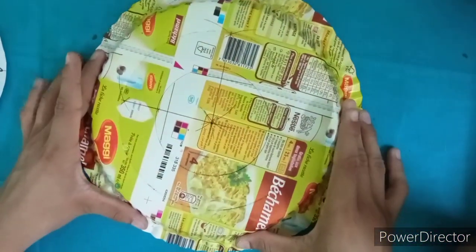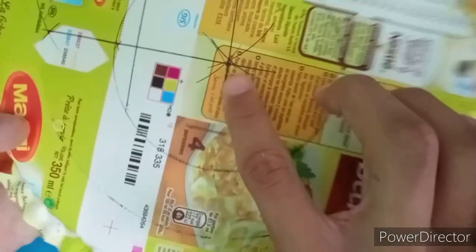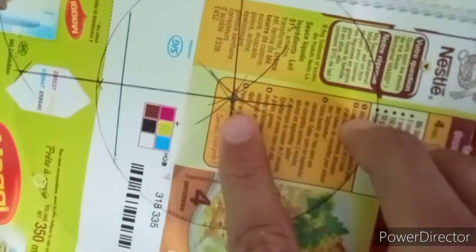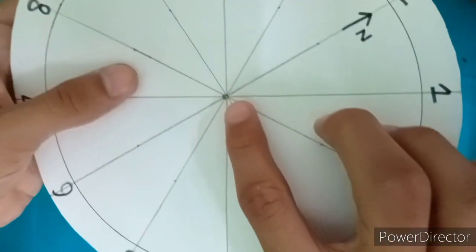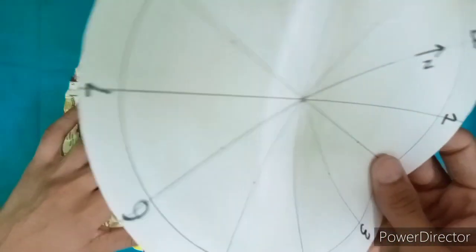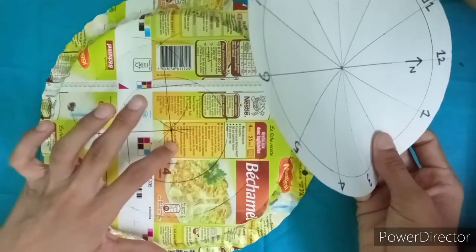Now I will take the plate and then I will make a hole in the middle of the plate as well as a hole in the middle part of the paper. Now I am going to stick this paper on the plate.